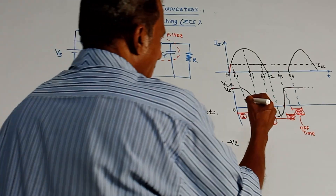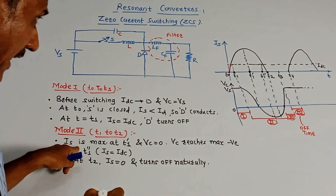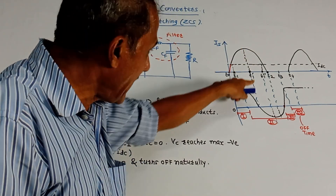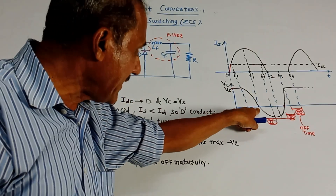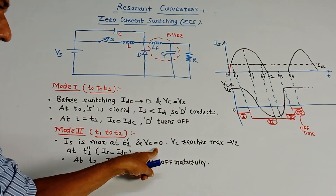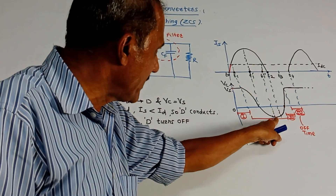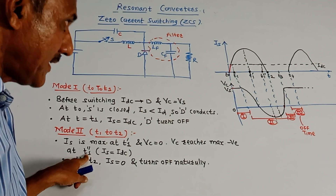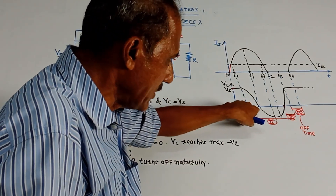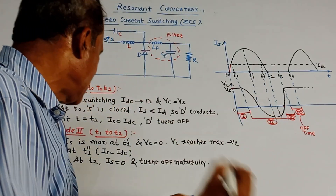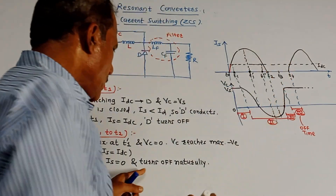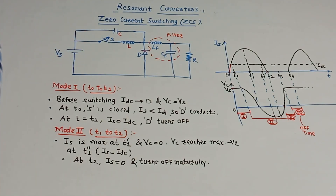Mode 2 is between T1 and T2. IS is continuously increasing and becomes maximum while VC, which was reducing, becomes 0. At T1⁻, IS achieves its peak value and VC reaches its maximum negative value. At T2, IS becomes 0 and the switch is turned off naturally. This is the zero current switching action.